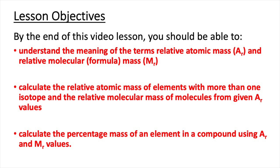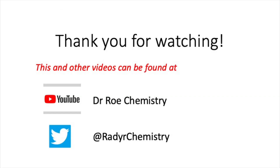That concludes this video lesson. After watching this video, you should now understand the meaning of the terms relative atomic mass (AR) and relative molecular mass (MR). You should also be able to calculate the relative atomic mass of elements with more than one isotope, the relative molecular mass of molecules from given AR values, and the percentage mass of an element in a compound using AR and MR values.